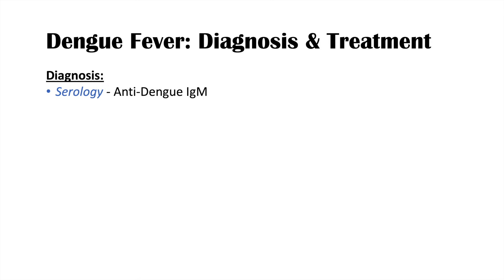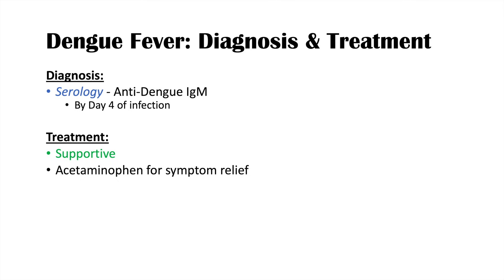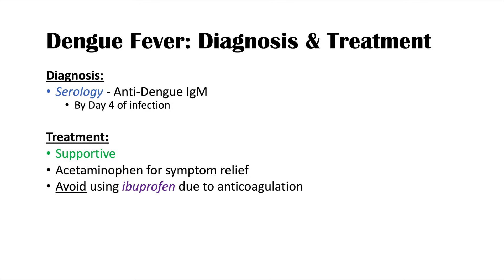Diagnosis of dengue fever is generally through serology. We look for anti-dengue IgM — immunoglobulin M antibodies against dengue virus — which can be detected by about day four of infection. Before day four, PCR may be used to detect viral genomes. Treatment is often supportive, as many patients recover spontaneously. Acetaminophen can be used for symptom relief, but we want to avoid ibuprofen due to its anticoagulation properties, given the decreased platelet count.